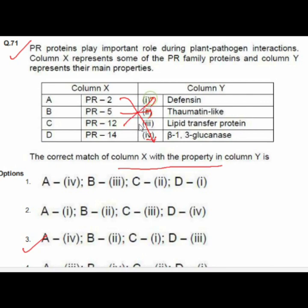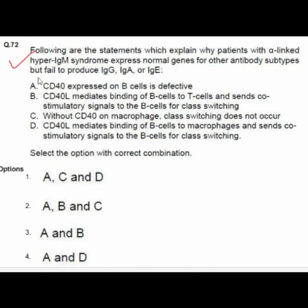Question 72: Patients with X-linked hyper-IgM syndrome express normal genes for their antibody subtype but fail to produce IgG, IgA, or IgE. Option 3 — A and B — is correct: A — CD40 expressed on B cells is defective; B — CD40L mediates binding of B cells to T cells and sends co-stimulatory signals to B cells for class switching.